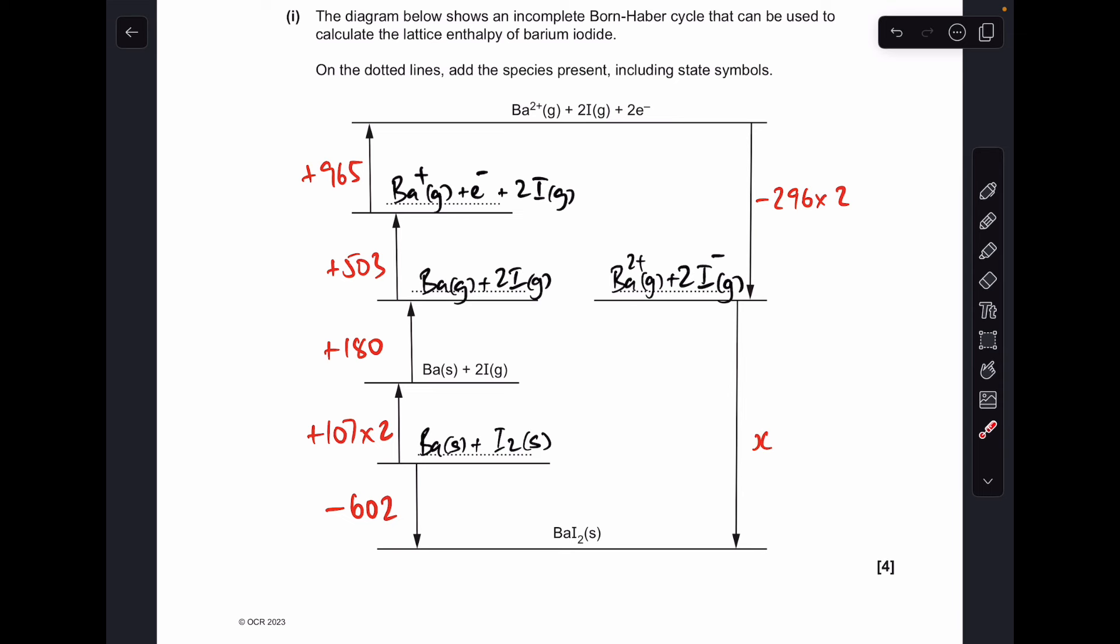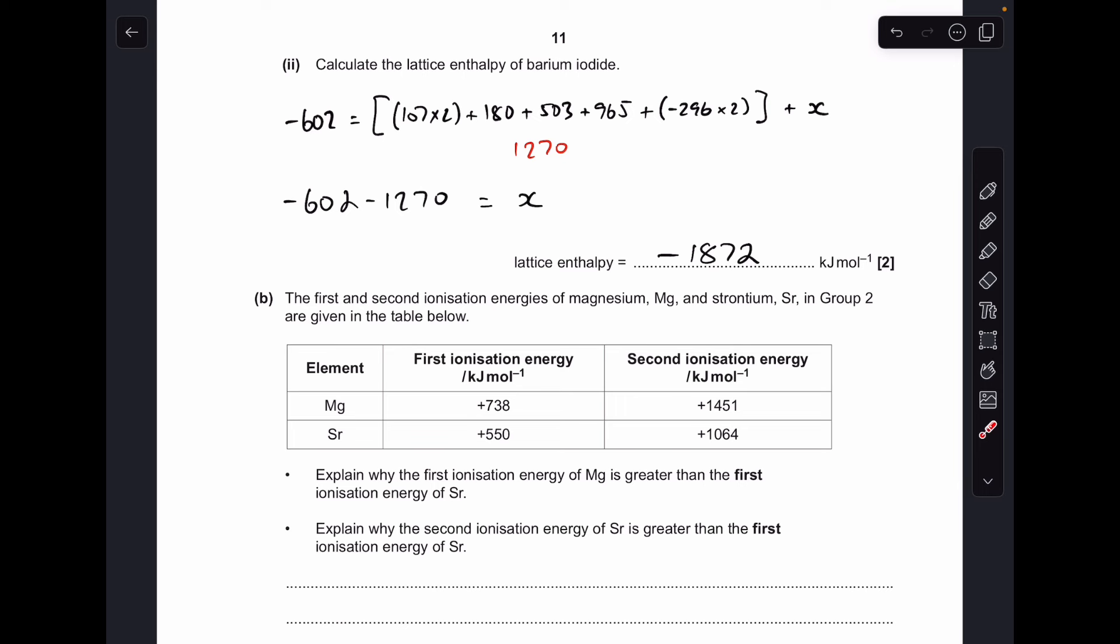The way I do these is I have a common start point, which is my elements, and a common finish point, which is the lattice. We have two routes to go from elements to the lattice: we can go down there, or we can go all the way around there. So that equals the sum of all of those. I'll just quickly run through the calculation.